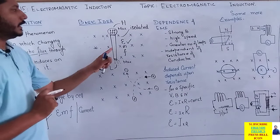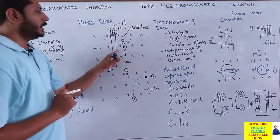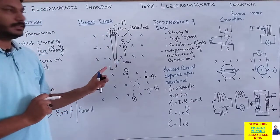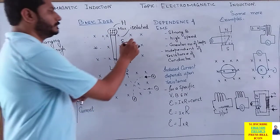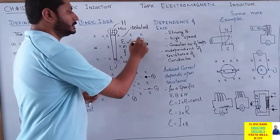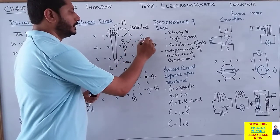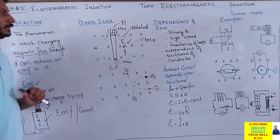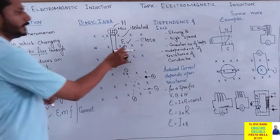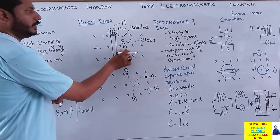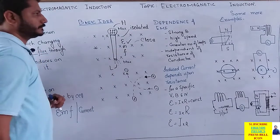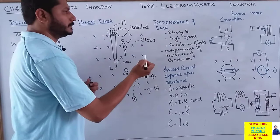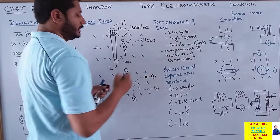یاد رکھیں کہ یہ EMF تب تک current provide نہیں کر سکتا جب تک circuit close نہیں ہے۔ تو اب یہ جو induced EMF ہے، اس کی dependence جو experiments بتاتے ہیں: strong magnetic field پر — اگر magnetic field stronger ہونا شروع ہو جائے تو EMF کا magnitude بھی بڑھنا شروع ہو جائے گا۔